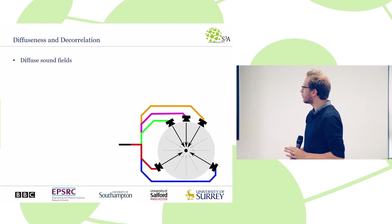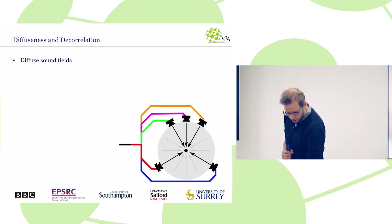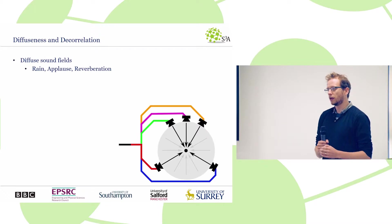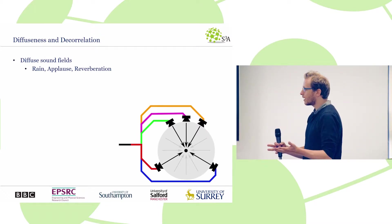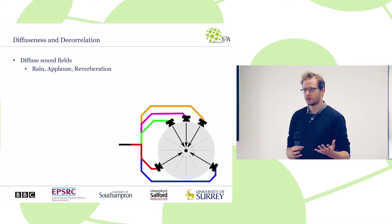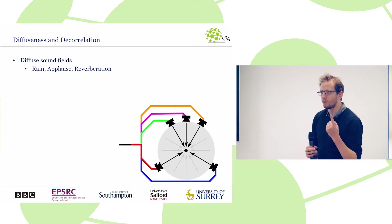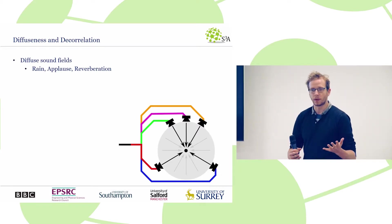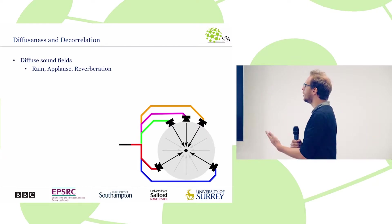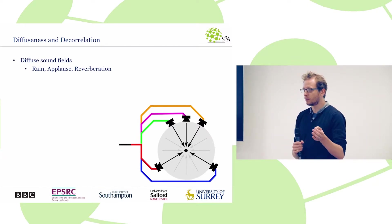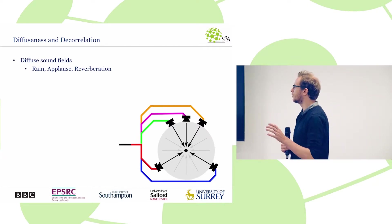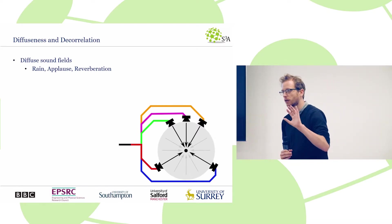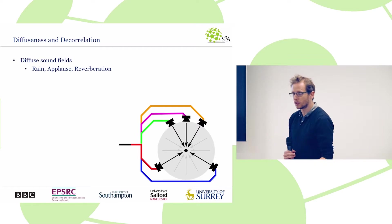When I'm talking about diffuse sounds, I'm specifically talking about things like rain, applause, and reverberation. You can think of them as sound objects, but they're not easily represented as a mono file with a direction, as would typically be done in object-based audio. In rain, you've got individual raindrops from all directions; in applause, individual claps from all directions; or reflections from all directions — so it's not a single direction.